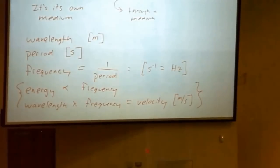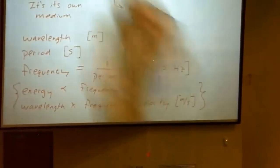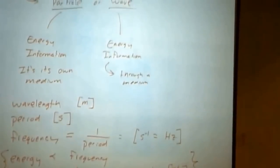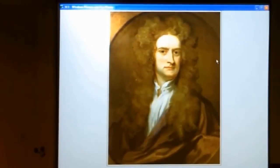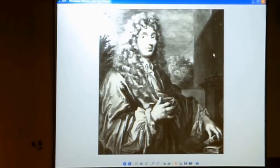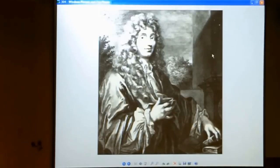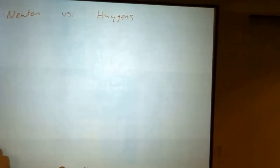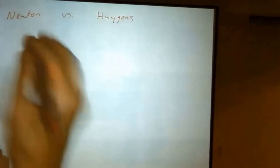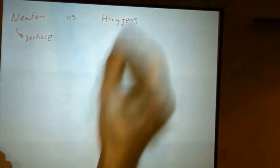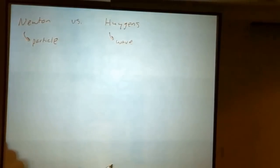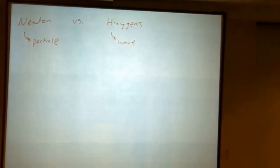We've talked about particles, we've talked about waves. Now we're going to go back to the subject of light and ask: is it a particle or a wave? This is a historic debate between Newton and Huygens — H-U-Y-G-E-N-S — who was also an astronomer. Newton argued that light was a particle, and Huygens argued that it was a wave. As we'll see, Huygens is more right, but Newton's also right. It's kind of tricky — it's subtle.